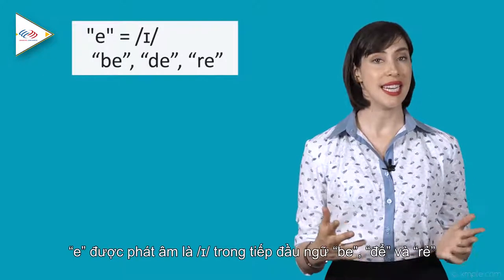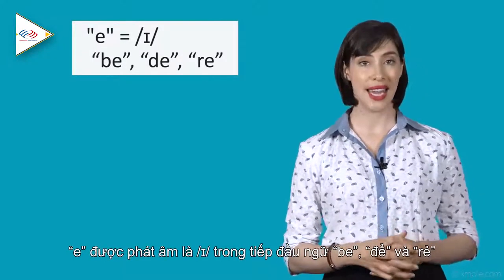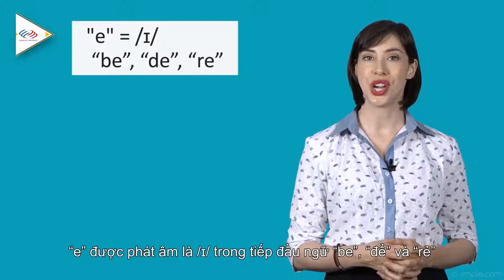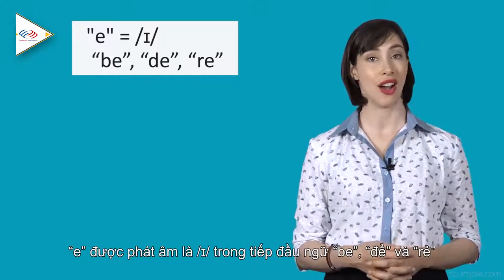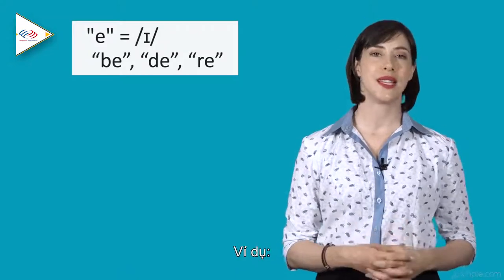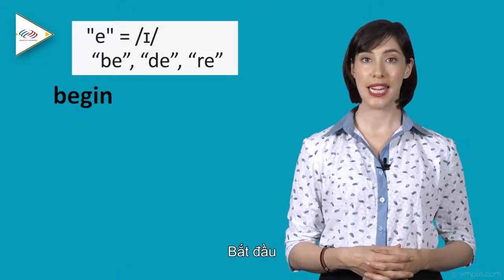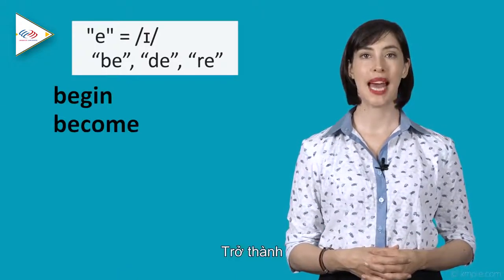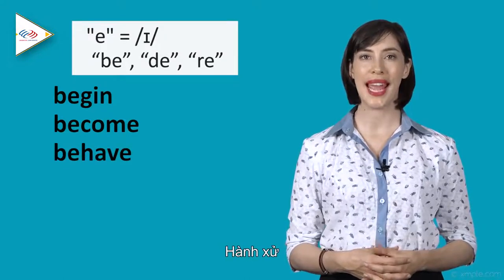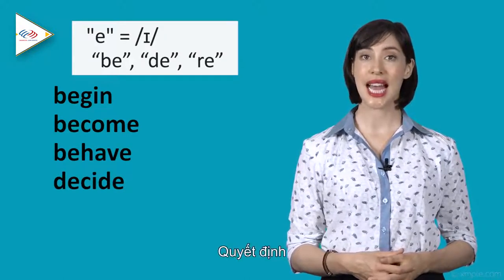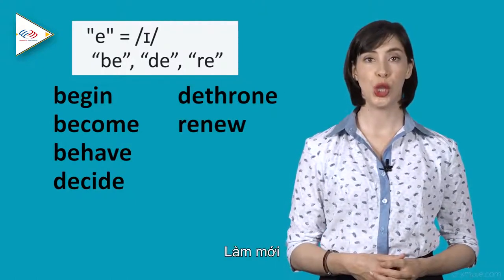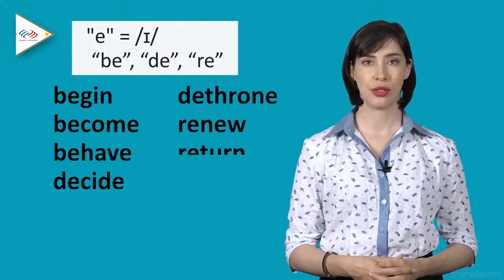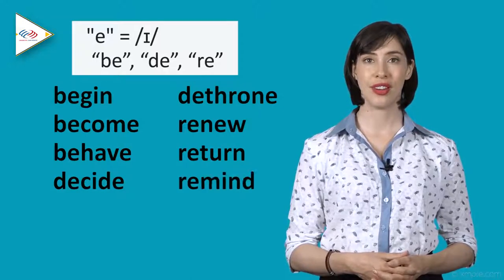Number two: the letter E is pronounced as a short E in some words starting with BE, DE, and RE. For example: begin, become, behave, decide, dethrone, renew, return, remind.